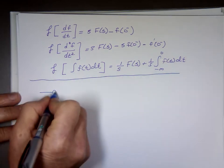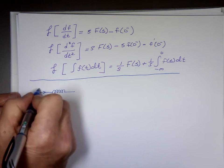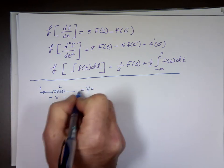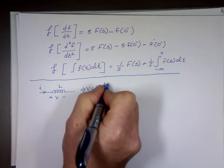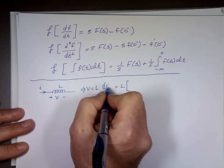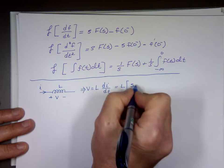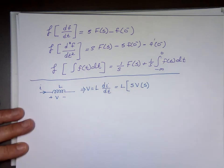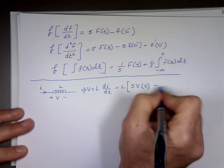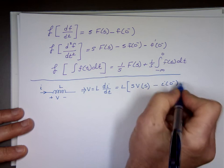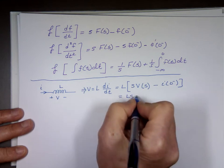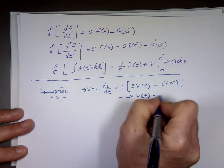Here is an inductor. This is the current going through it, this is the voltage, and this is L. We know V equals L di/dt. So if you take the Laplace of that, that's s times V(s) minus the current at 0 minus — not the voltage, because that's the derivative of the current. If you distribute, you get Ls·I(s) minus L·i(0 minus).